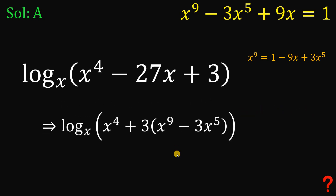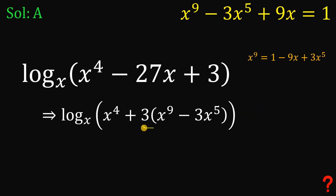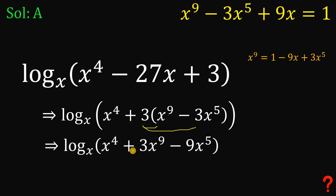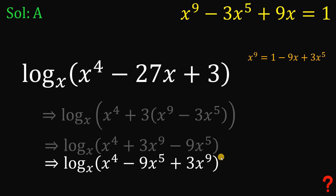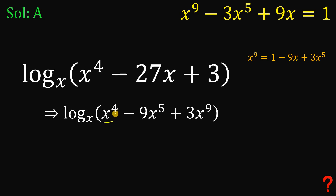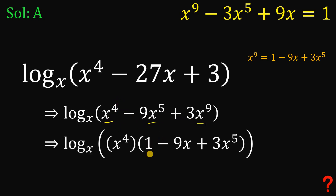Now let's distribute this 3 to x raised to the power of 9 and negative 3x raised to the fifth power. We get x raised to the fourth power plus 3x raised to the power of 9 minus 9x raised to the fifth power. Rearranging the terms: x raised to the fourth power minus 9x raised to the fifth power plus 3x raised to the ninth power. Let's now factor out x raised to the fourth power, since all three terms share that factor. Doing so gives x raised to the fourth power multiplied by 1 minus x raised to the first power plus 3x raised to the fifth power.